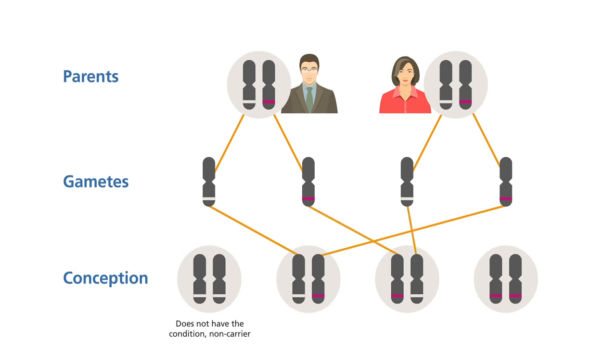When one copy of the usual gene and one copy of the altered gene is inherited, these children are carriers for the condition, like their parents.